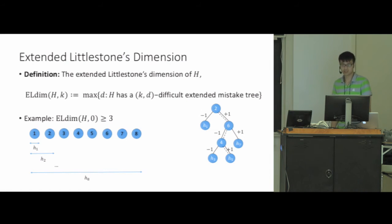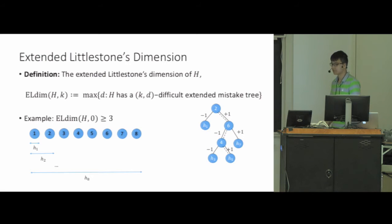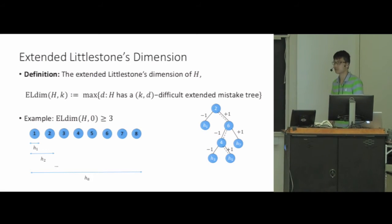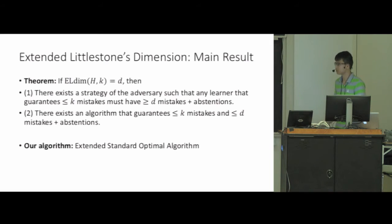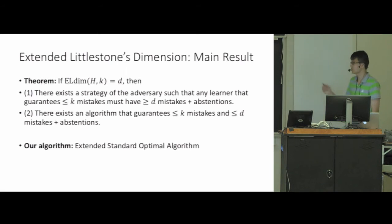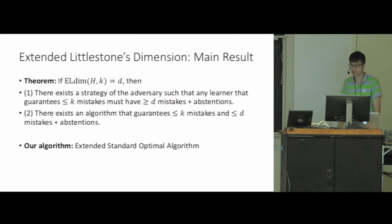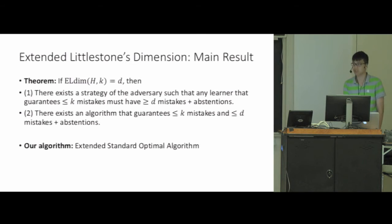Using the extended mistake tree, we developed a notion called the Extended Littlestone's Dimension, which takes two parameters: the hypothesis class and the mistake budget k. It is defined as the maximum d such that the hypothesis class has a kd-difficult extended mistake tree. Our main result is: if the extended Littlestone's dimension equals d, then any learner guaranteeing at most k mistakes has at least d mistakes plus abstentions. Conversely, we construct an algorithm called the Extended Standard Optimal Algorithm that guarantees at most k mistakes and at most d mistakes plus abstentions.